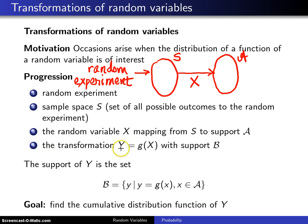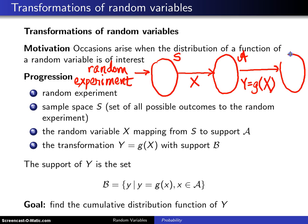Finally, there's some transformation Y equals G of X — notice these are all uppercase. That could be any function you want; it could be seven times the square root of X. That will be defined on a support set, script B, which is typically different than support set A. So the support set of Y is script B, which is the set of all Y such that Y is an element of G of X, where X is an element of script A.